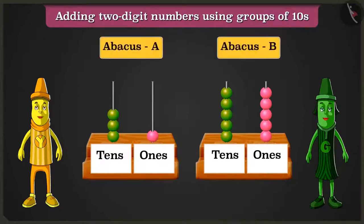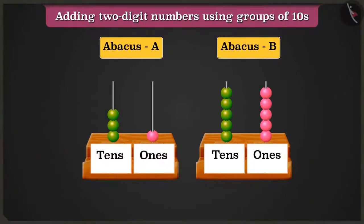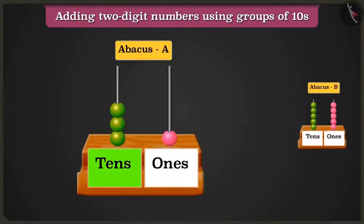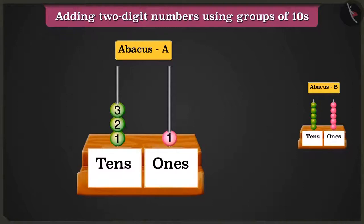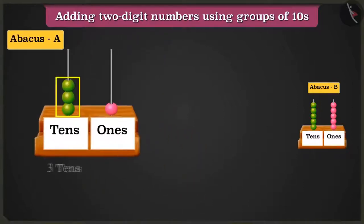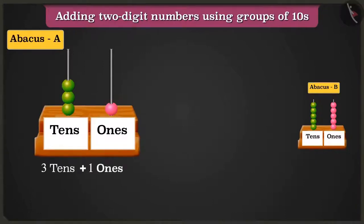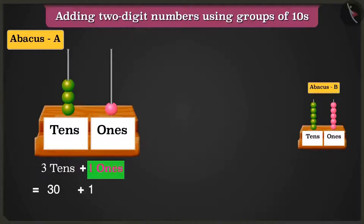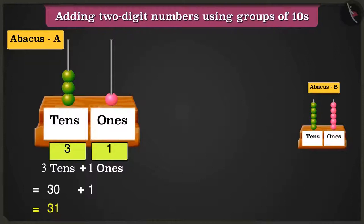That is an abacus. Let us look at another example. Look, in abacus A, the box of tens has three beads and the box of ones has only one bead. So abacus A has three tens and one ones. Adding three tens that are thirty and one ones that is one will be equal to thirty-one.